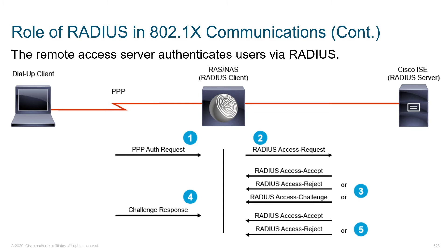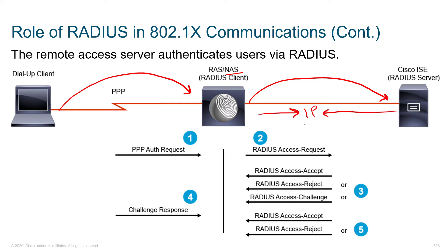Looking at the RADIUS process in more detail: we've got a dial-up client building a connection to a network access server that's a RADIUS access server, relaying that information to the RADIUS server. When you have a RADIUS client and a RADIUS server, they've got to point at one another. Each side points to the other side's IP address, and we set a shared password so both sides know it's really the other device. If your client has multiple interfaces and one goes down, requests may come from a different IP, so you might want to tie that communication to a logical interface that stays up to avoid issues with non-validated IPs.